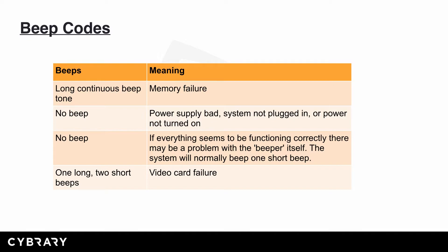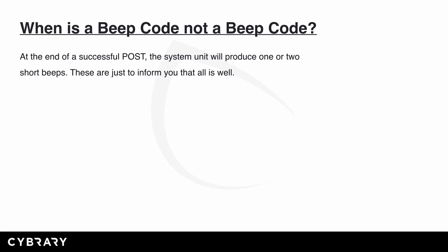Another code to be aware of is one long, two short beeps, which indicates a video card failure. In modern-day motherboards, these two — one long, two short beeps indicating video card failure, and the long continuous beep indicating memory failure — are the two most common ones and the only two you would need to worry about on new modern motherboards. Now, when is a beep code not a beep code? At the end of a successful POST, the system unit will produce one or two short beeps, which simply inform you that all is well and everything powered up correctly.